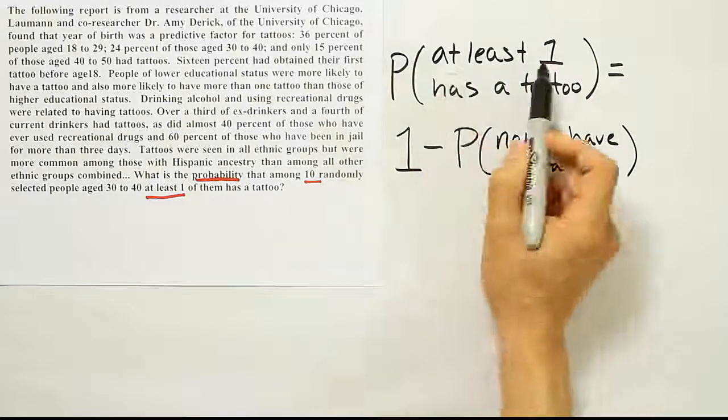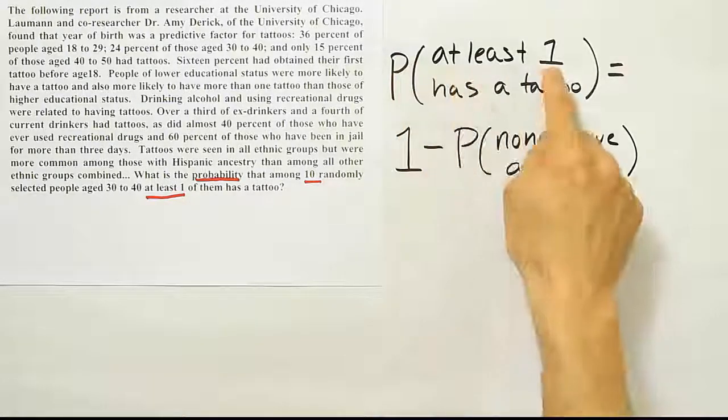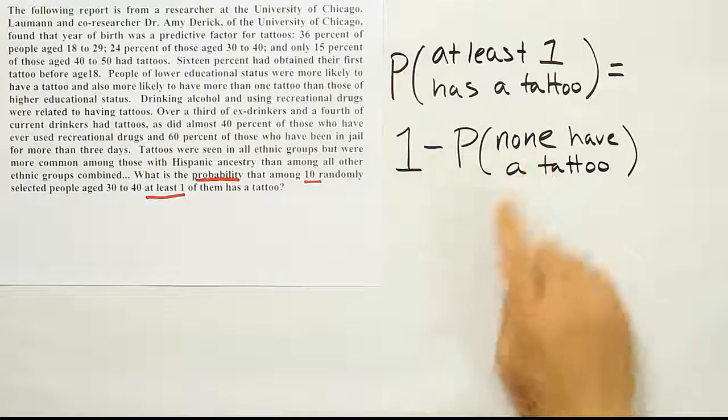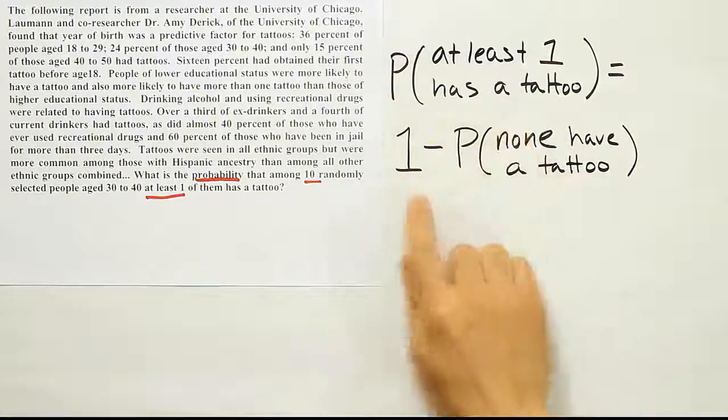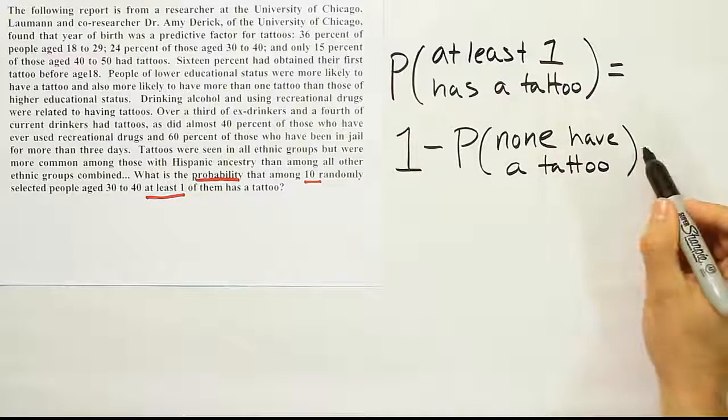So again, at least one goes with none. It's a nice little poem there, it rhymes. Probability of at least one is one minus the probability of none. So at least one has a tattoo, one minus the probability that none have tattoos.